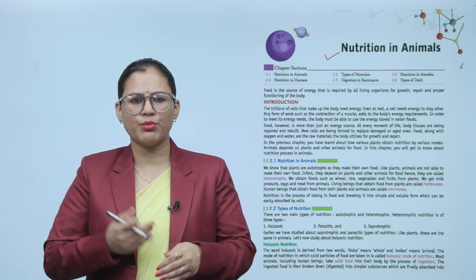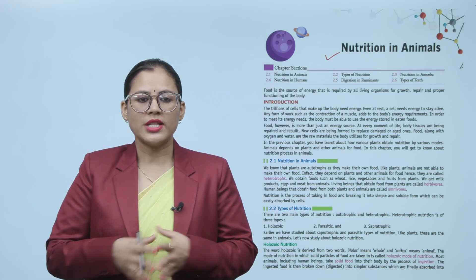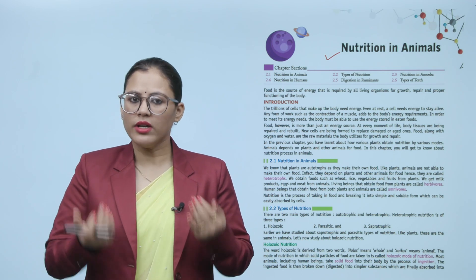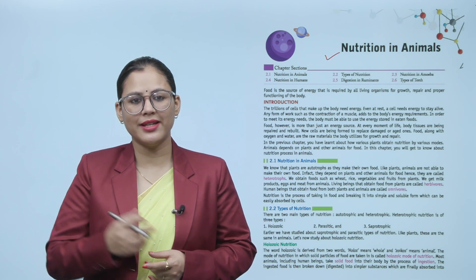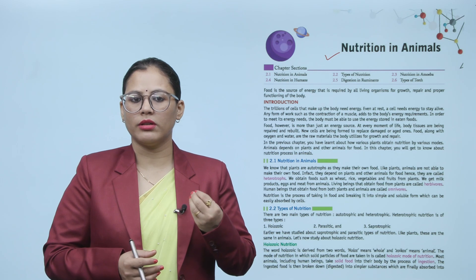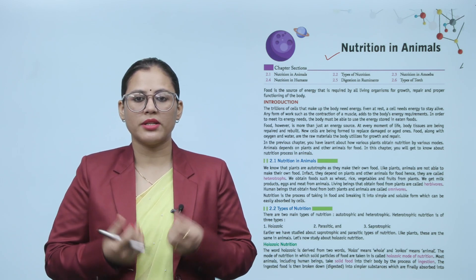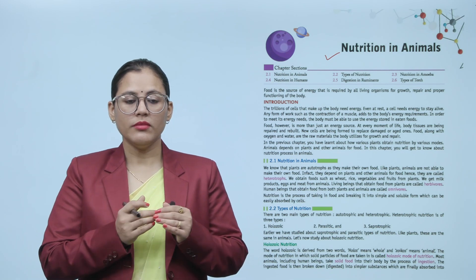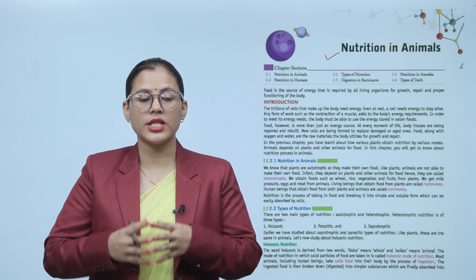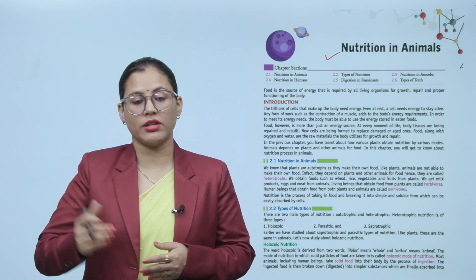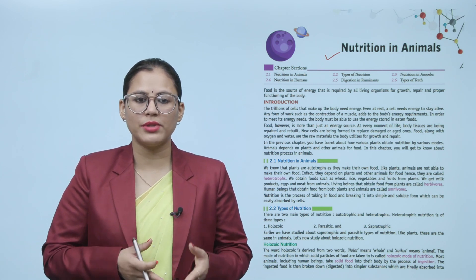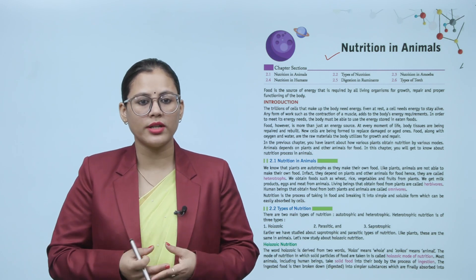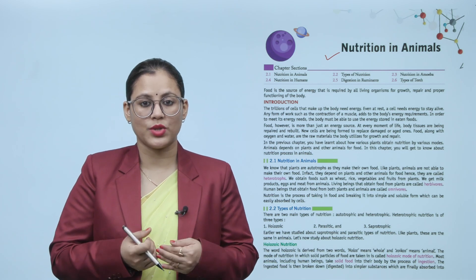In the previous chapter we covered the nutrition process in plants, and in this chapter we are covering the nutrition process in animals. Every living organism's body is made of trillions of cells, and they need energy — even if the body is at rest, the cell requires energy to stay alive. Food, along with oxygen and water, is utilized in the body for growth and repair.